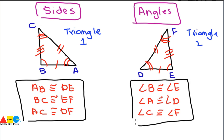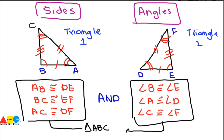This is the condition for congruency of two triangles. For congruency, both conditions must hold: the sides and the angles must both be equal. If both these things are equal, we can say that triangle ABC is congruent to triangle DEF. So to establish congruency, you must check the sides as well as the angles.